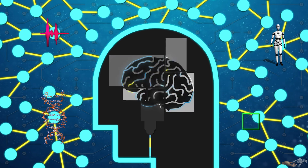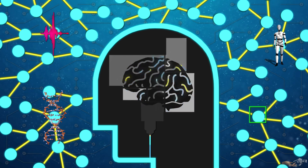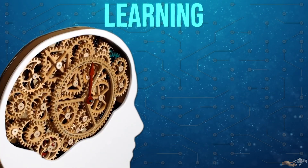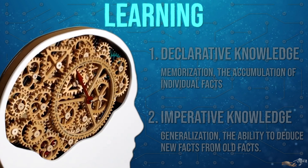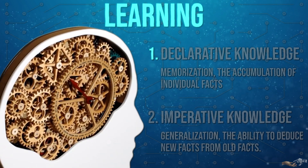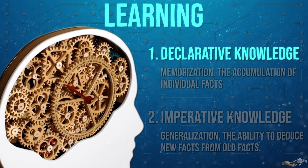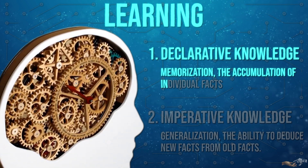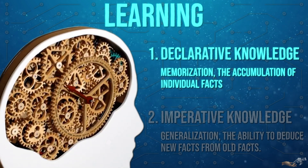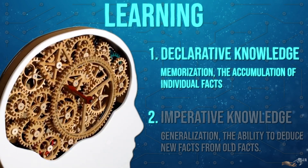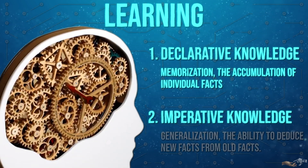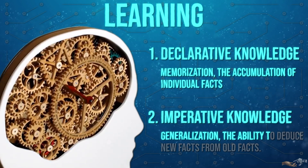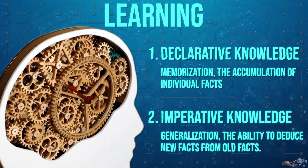To define what machine learning is, let us first define what learning is. As humans, we have two primary modes of learning. One, declarative knowledge — in other words memorization, the accumulation of individual facts. And two, imperative knowledge — in other words generalization, the ability to deduce new facts from old facts.